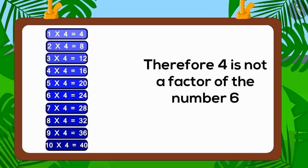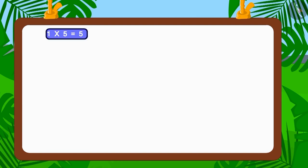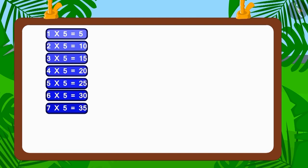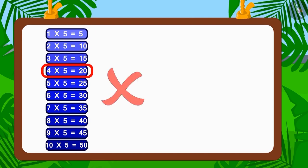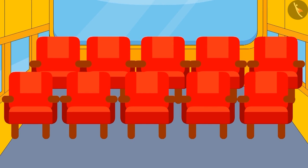Similarly, if we look at the table of 5, then we will find that 5 is also not a factor of number 6. So a bus in which 5 people sit in each row will not be of any use to the villagers.